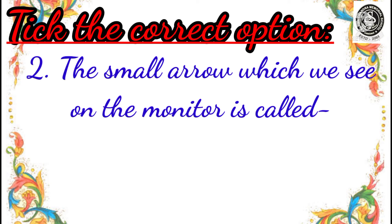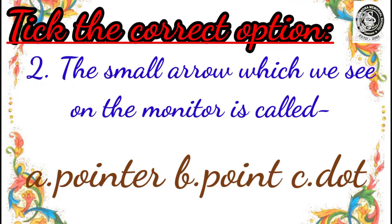Question number 2: The small arrow which we see on the monitor is called? Option A: pointer, Option B: point, and Option C: dot. Now you tell me which is the correct option for it.